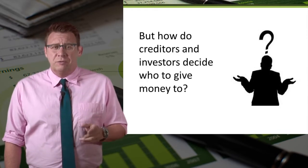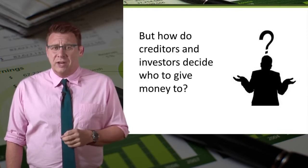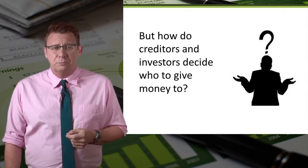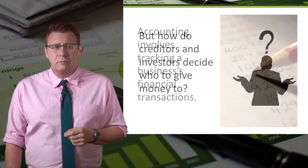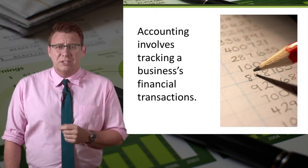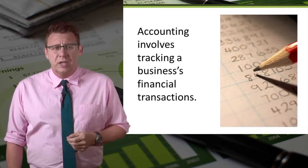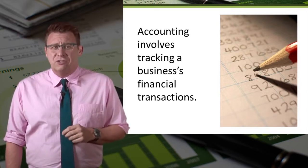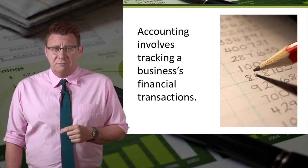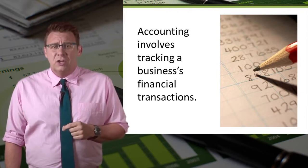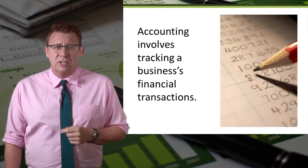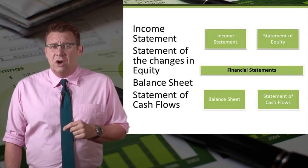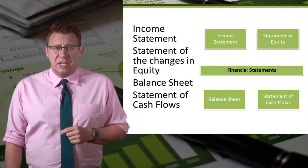So how do investors and creditors decide who to invest or lend money to? This is where accounting comes into the picture. Accounting records the financial transactions of a business and communicates this information to potential investors and creditors. The output of the accounting process are the financial statements.